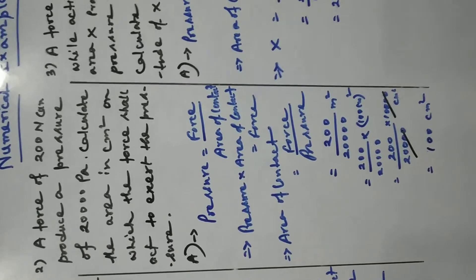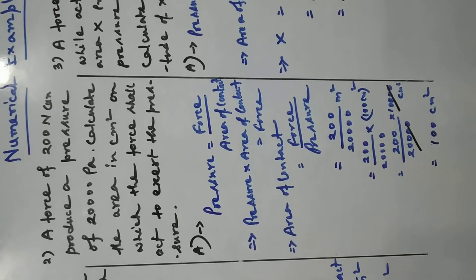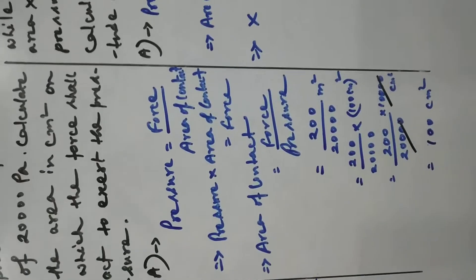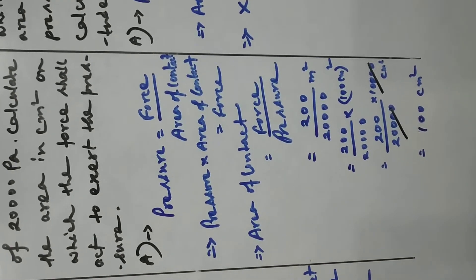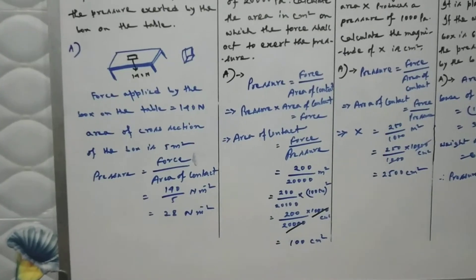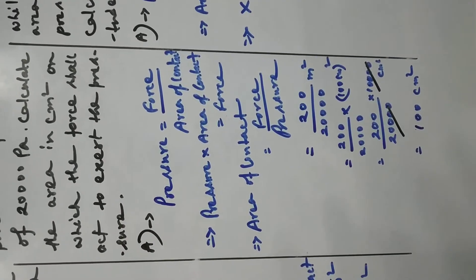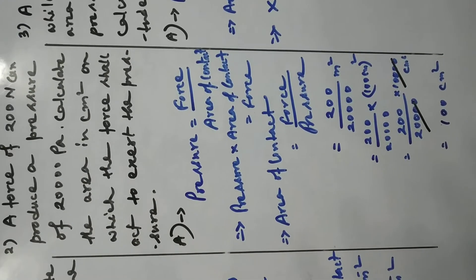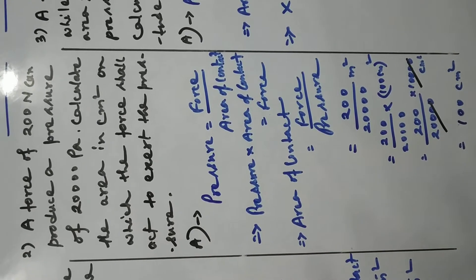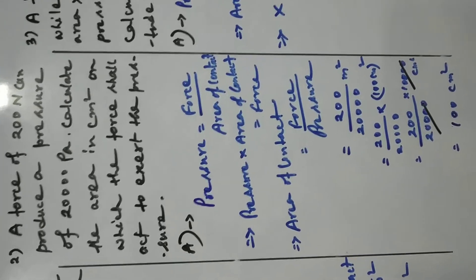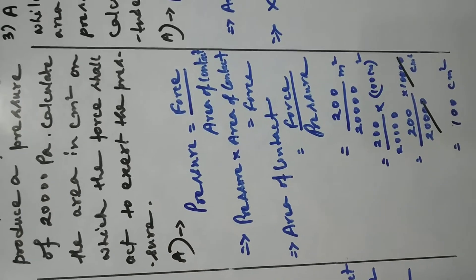Force is given as 200 Newton and pressure is given as 20,000 Pascal. We have to find the area of contact in centimeter square. Pressure is equal to force by area of contact, so after cross multiplication, area of contact is equal to force divided by pressure. Force is 200 Newton and pressure is 20,000 Pascal, so area of contact is 200 by 20,000 meter square.